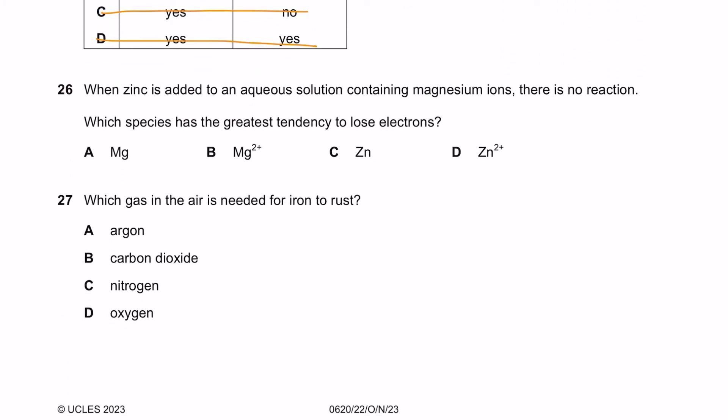Question 26. When zinc is added to an aqueous solution containing magnesium ions, there is no reaction. Which species has the greatest tendency to lose electron? An atom will only lose electron when it's trying to become stable.